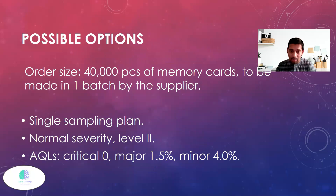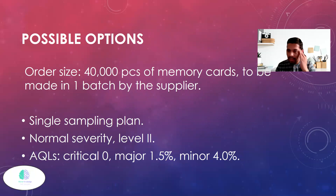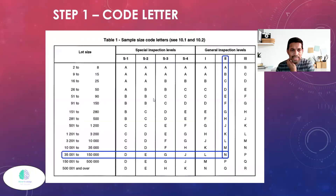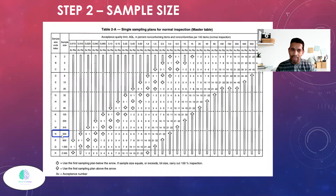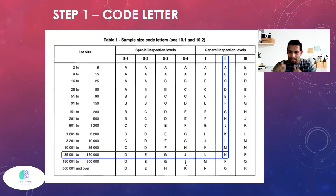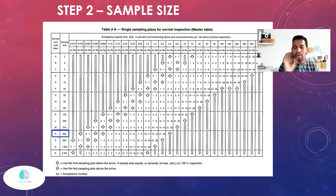For this example with 40,000 pieces, we use a single sampling plan at normal severity level II. The AQL levels are: critical zero, major 1.5, minor 4.0. Step one: determine the code letter. The batch of 40,000 falls between 35,000 and 150,000, so we select the corresponding row at level II, which gives us code letter N. That N corresponds to a sample size of 500.